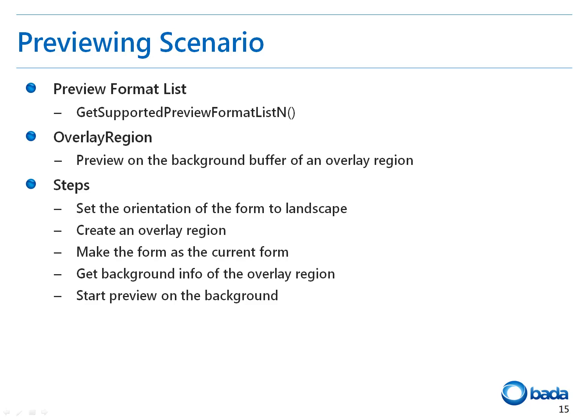To draw the camera's preview on the screen, you have to prepare the overlay region. As with the video player, the preview is drawn in the background buffer of the overlay region. In general, for a camera preview, you have to create a new form and set the orientation to landscape. Then create a new overlay region, add it to the form, and set the form as the current form. After this, you need to acquire the buffer info of the background buffer of the overlay region, pass it to the camera class, and start the preview.